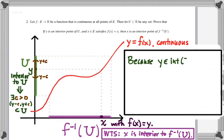So we'll say in our proof, because y is an interior point of U, there exists a c greater than zero such that the open interval y minus c to y plus c is completely a subset of U.